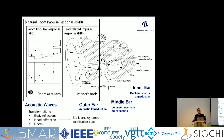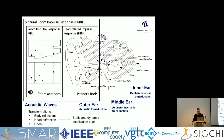In this kind of impulse response, we have a lot of information about the quality of the environment, the quality of the interaction, and in particular how our body interacts with the environment, producing localization cues from static and dynamic movements of sound sources and body.